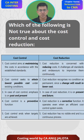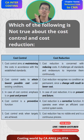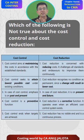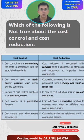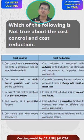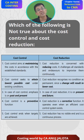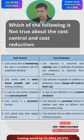Cost control always speaks of past and present — we set standards in the past and try to find variances in the present. Cost reduction is mainly future-oriented; I want to reduce my cost in the future. Cost control is a preventive function — it prevents higher costs. Cost reduction is a corrective function — even if your cost is normal, we still want to correct it and bring it lower.